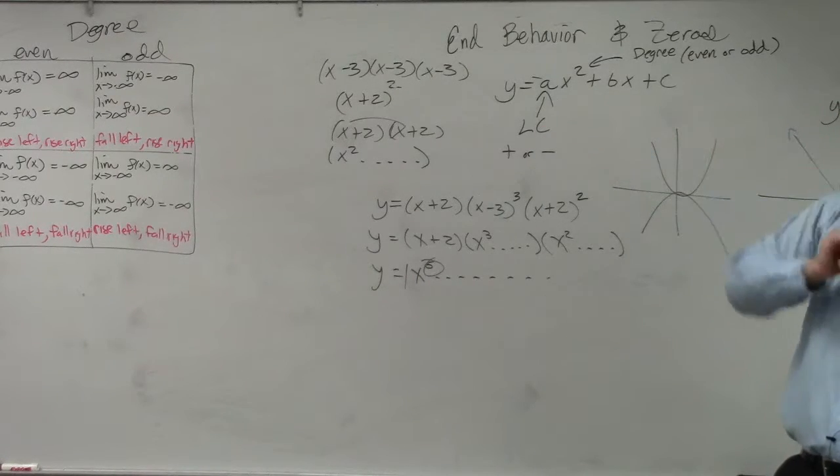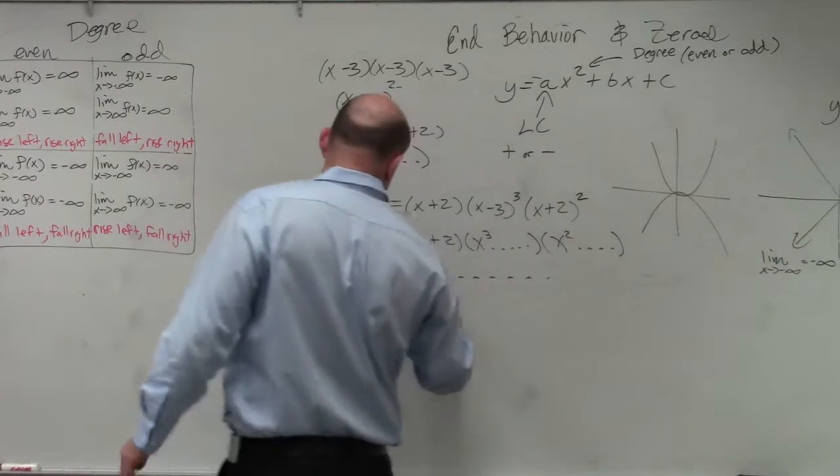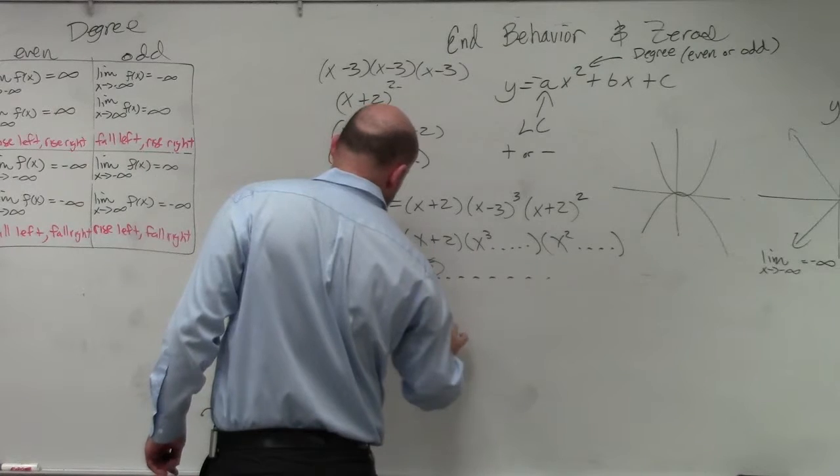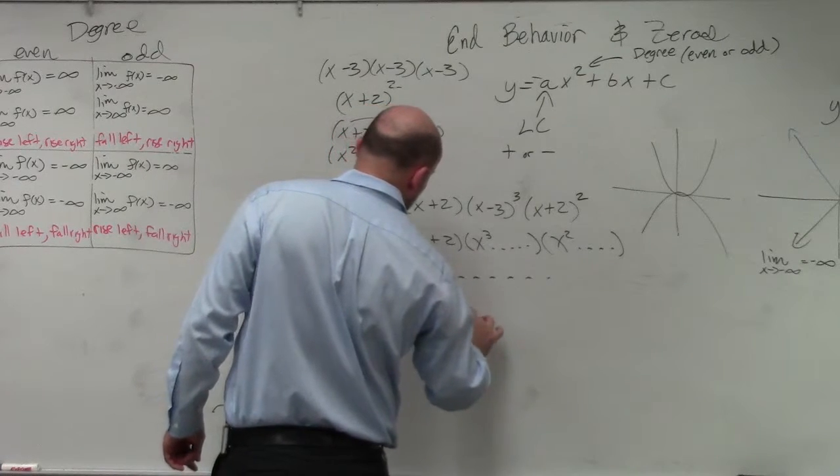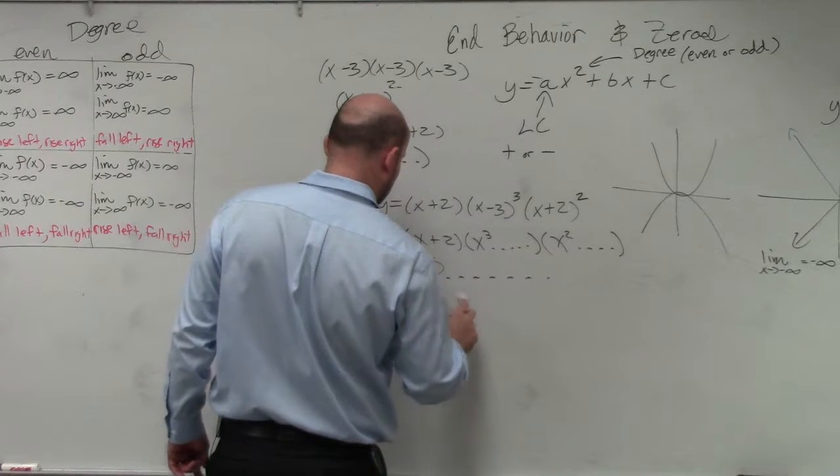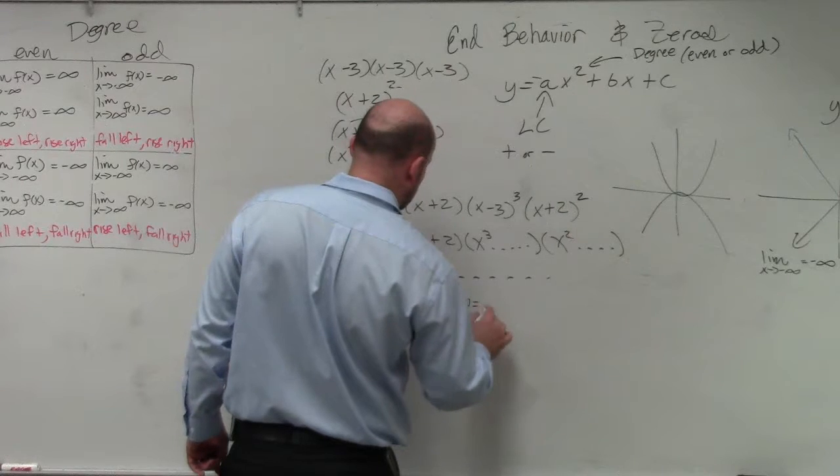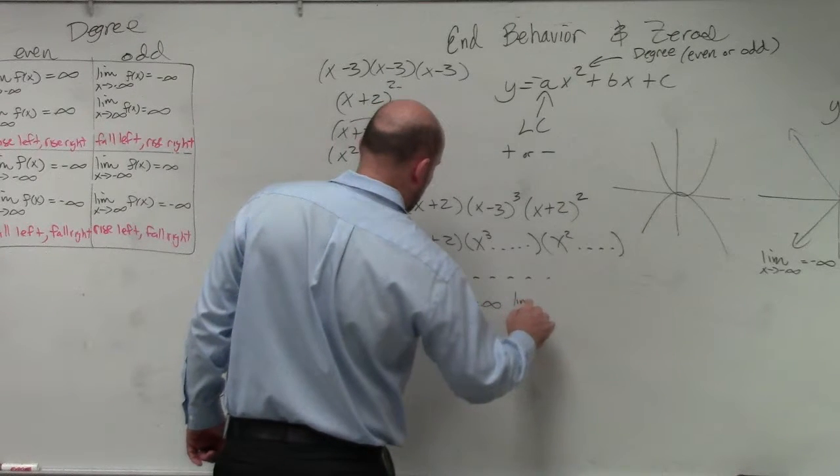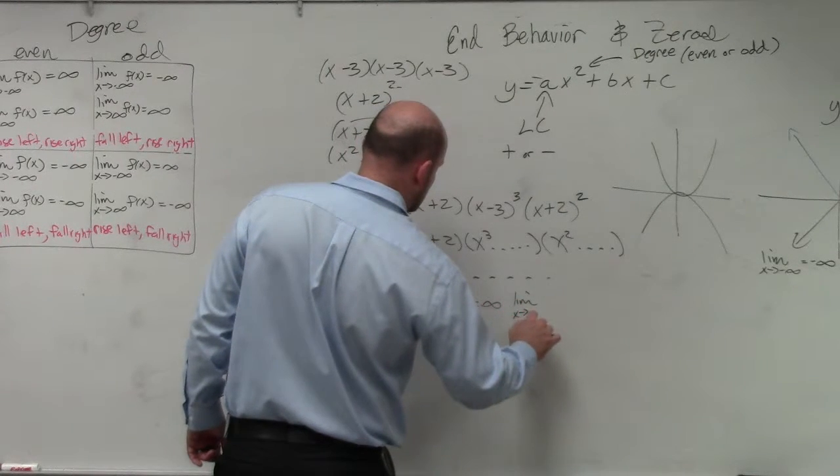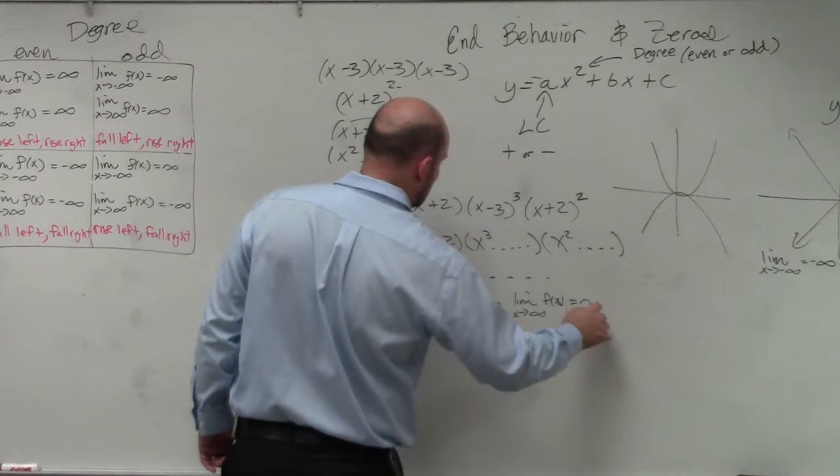So the limit as x approaches negative infinity of our function, I'll just call it f of x, equals infinity, and the limit as x approaches positive infinity of f of x is going to be equal to infinity.